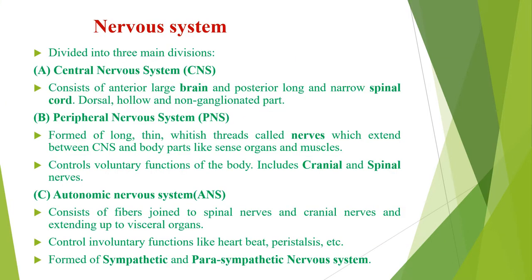In this part of the video, first of all we will discuss the Nervous System. The Nervous System is divided into 3 main divisions: Central Nervous System, Peripheral Nervous System, and Autonomic Nervous System. The Central Nervous System mainly consists of the anterior large brain and posterior long and narrow spinal cord, which is dorsal, hollow, and non-ganglionated.